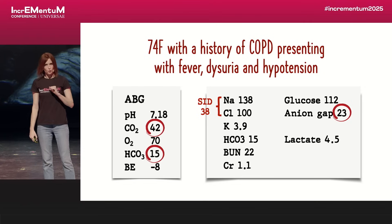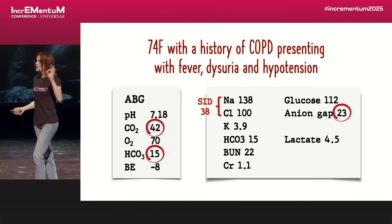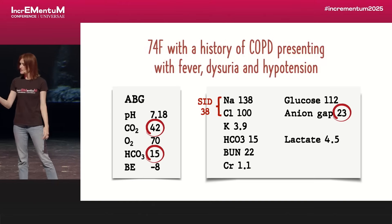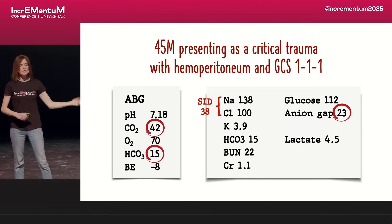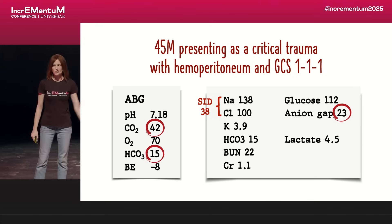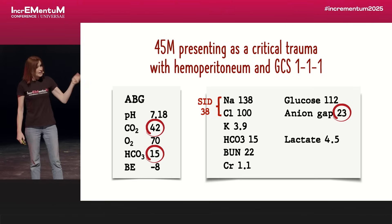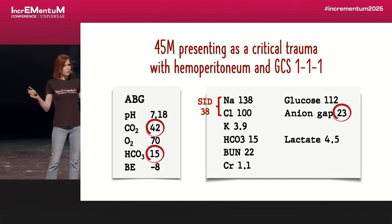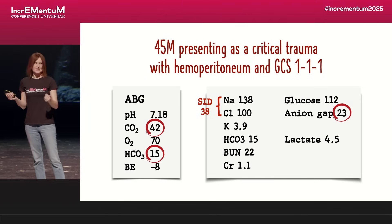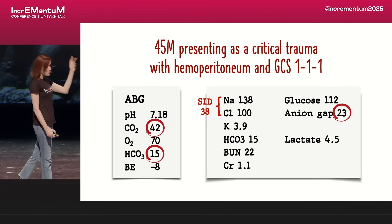Why is her CO2 higher than it should be? She probably has bad COPD, so she's just not capable at baseline of compensating by blowing her CO2 down. What about the same ABG numbers in a 45-year-old guy coming in with critical trauma — blood in his belly, hypotensive, and unconscious with a terrible GCS? Well, the anion gap acidosis is probably due to hemorrhagic shock. Why is his CO2 inappropriately high? His GCS is 1-1-1 — he's probably not protecting his airway and not breathing enough, and maybe you need to intubate him.